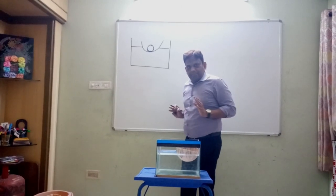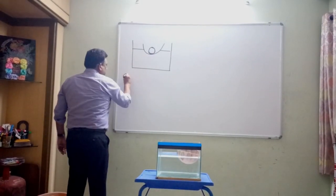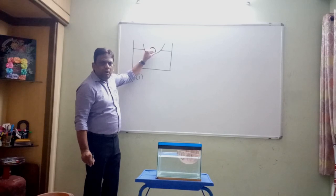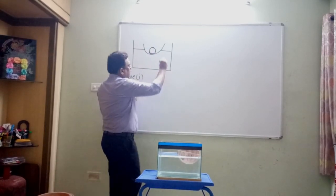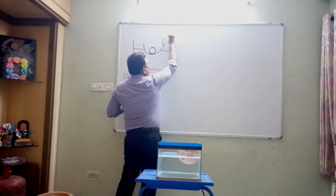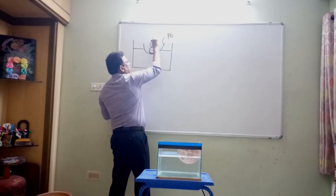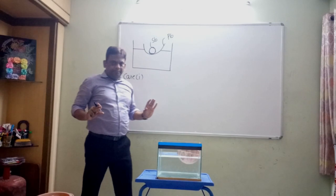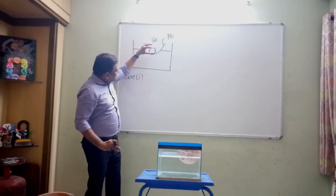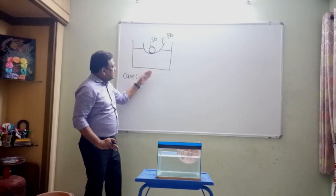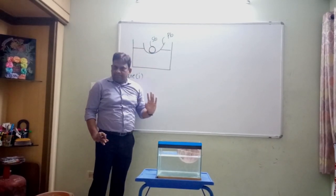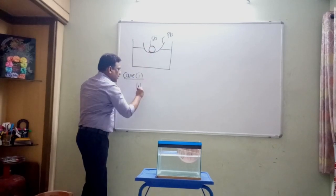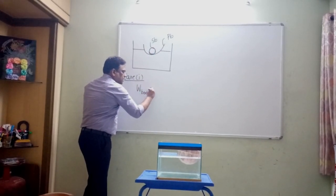Let us discuss these two cases. Case 1: we have a plastic bowl with a steel ball floating. Let PB be the plastic bowl and SB be the steel ball, and it is floating in equilibrium. We know from the principle of flotation, the weight of the system in the downward direction is equal to the buoyancy force in the upward direction. Weight of this complete system, which I call it as a body, is equal to the buoyancy force.